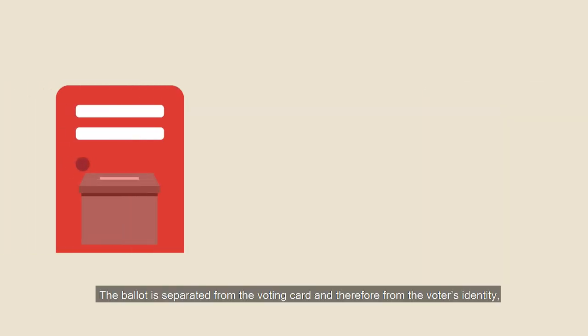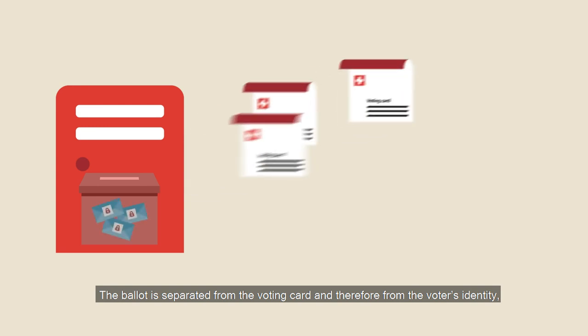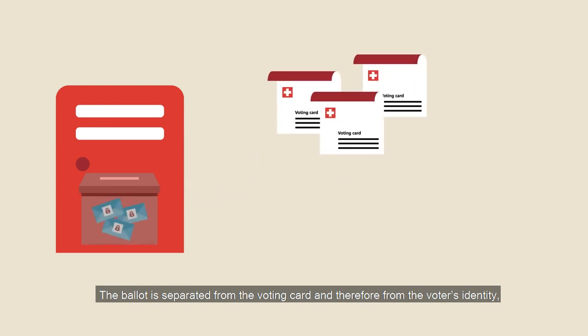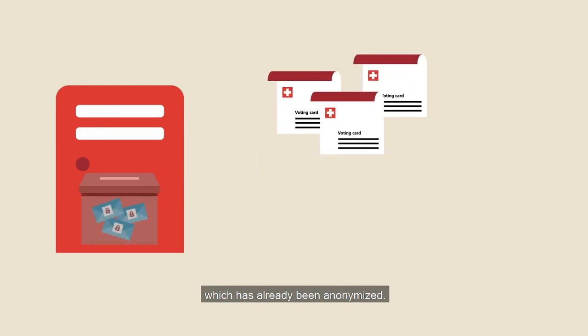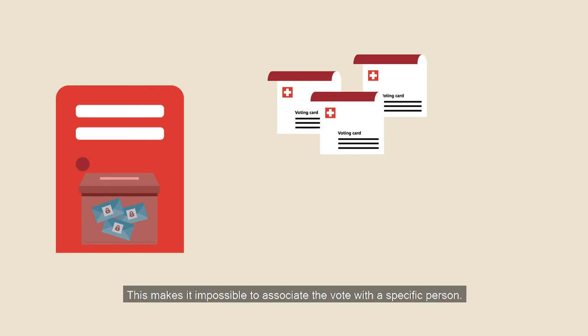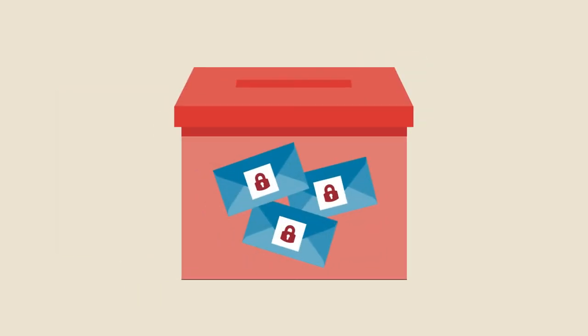The ballot is separated from the voting card, and therefore from the voter's identity, which has already been anonymised. This makes it impossible to associate the vote with a specific person. The votes that have been cast remain encrypted during this process.